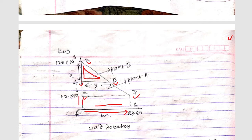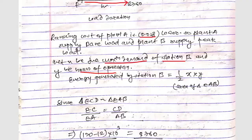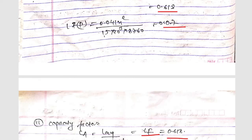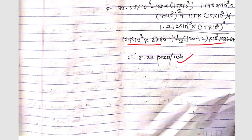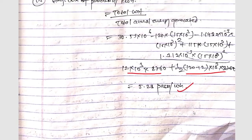From the figure, the total energy generated equals the rectangle area CDGF plus triangle ECD. Combining all values gives an average cost of production of 5.28 paise per kilowatt hour. You can solve such types of numericals using this method. Thanks for watching and please don't forget to subscribe to my channel.